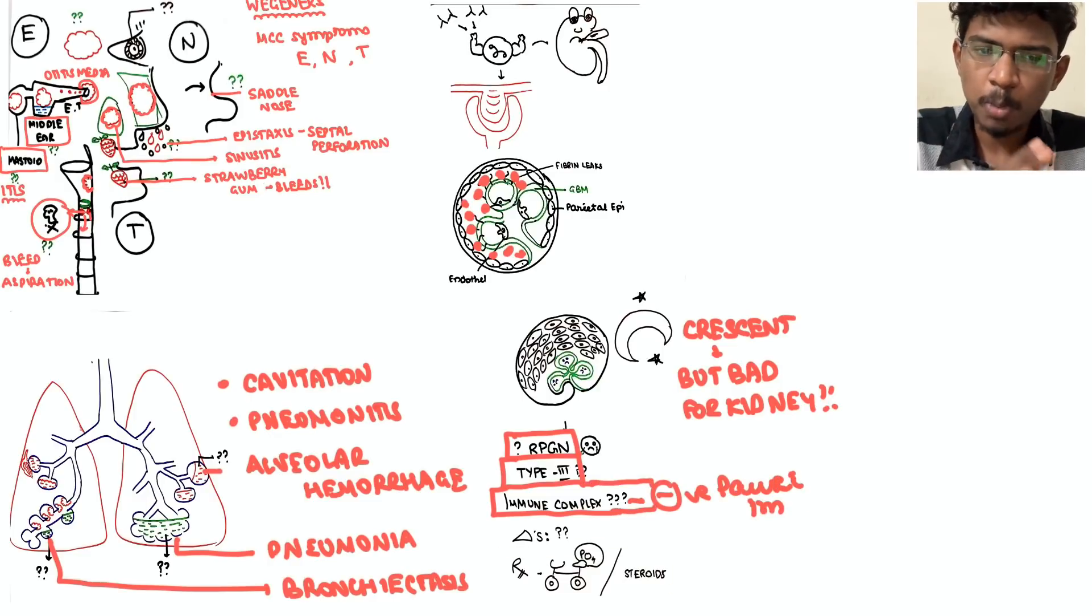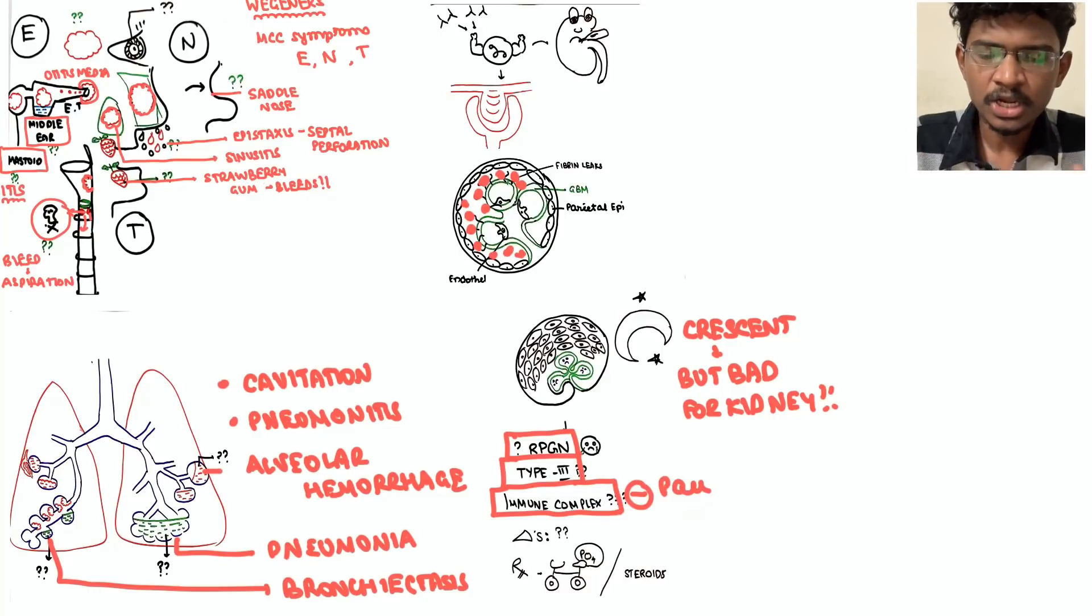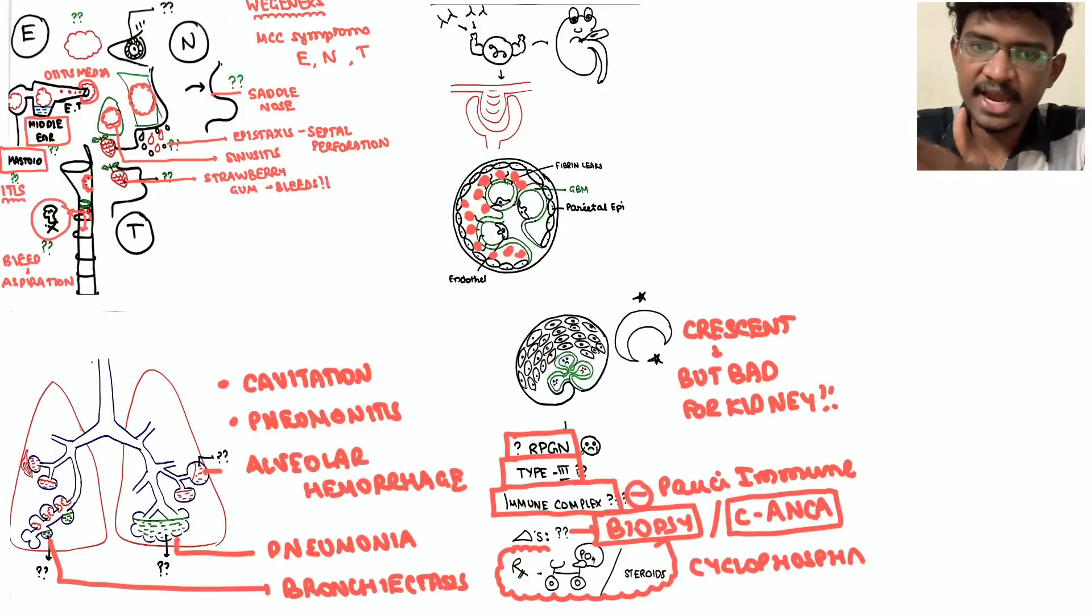So here this is the RPGN - rapidly progressive glomerulonephritis type. Is there any immune complex you are seeing here? No, it's just neutrophil, so pauci-immune complex mediated type 3. And how will you diagnose Wegener's? Just by tissue biopsy - wherever granulomas are there, go there, biopsy it, and as well as see ANCA analysis. Treatment will be steroids you can give, but mostly they will be controlled only by cyclophosphamide.